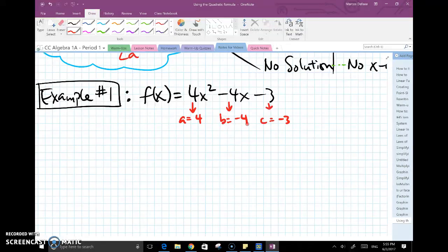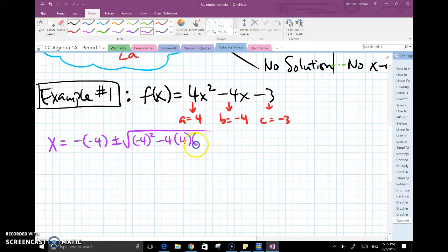I would have x equals negative negative 4 plus minus square root of negative 4 squared minus 4 times my a times my c, all over 2 multiplied by my a, which is 4. When you substitute the numbers in, the whole thing expands, but it shrinks down just as quickly. In fact, in about two or three steps, usually this whole thing is done.